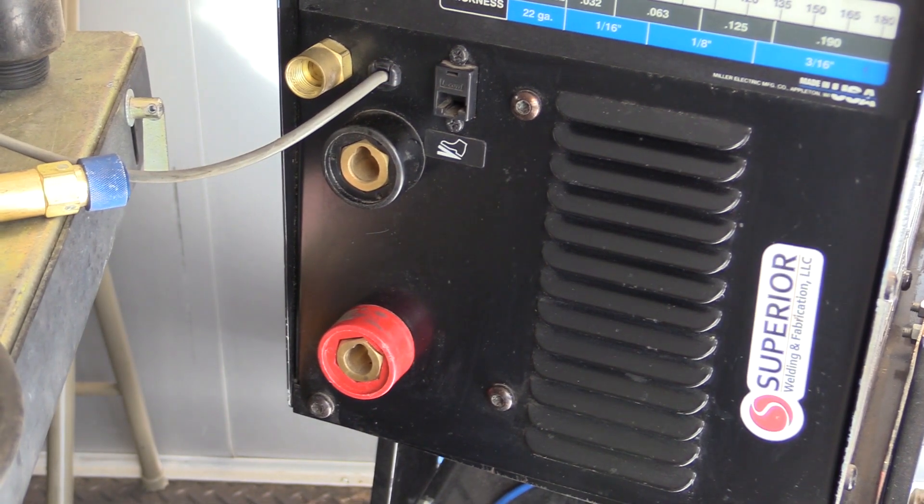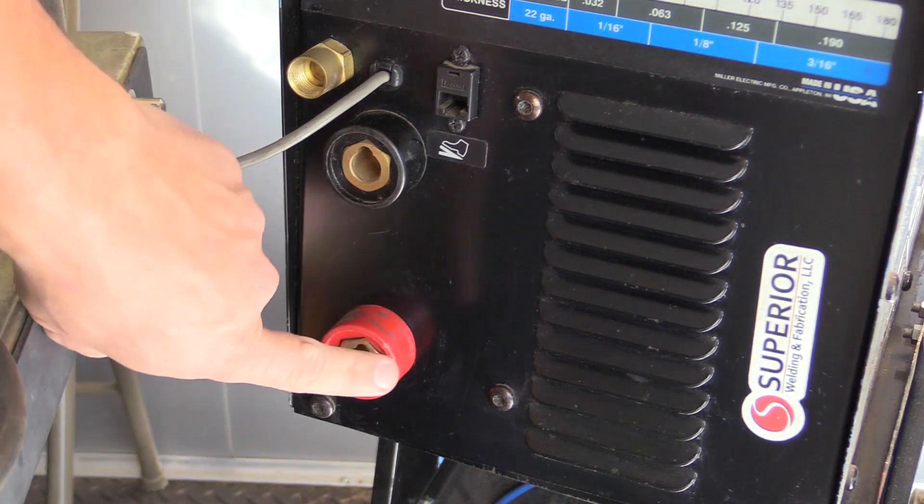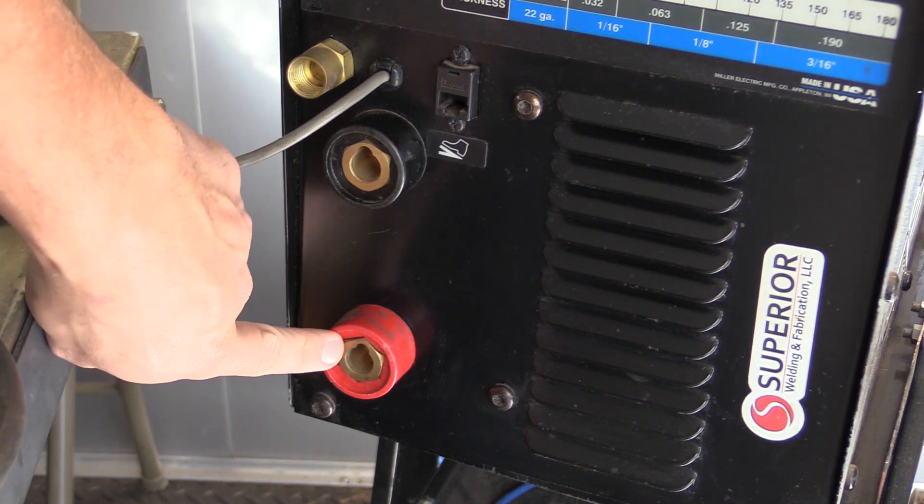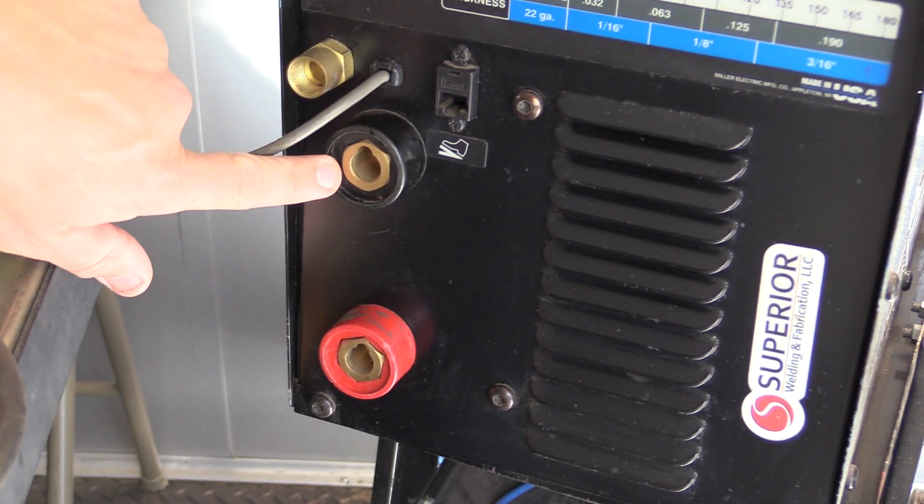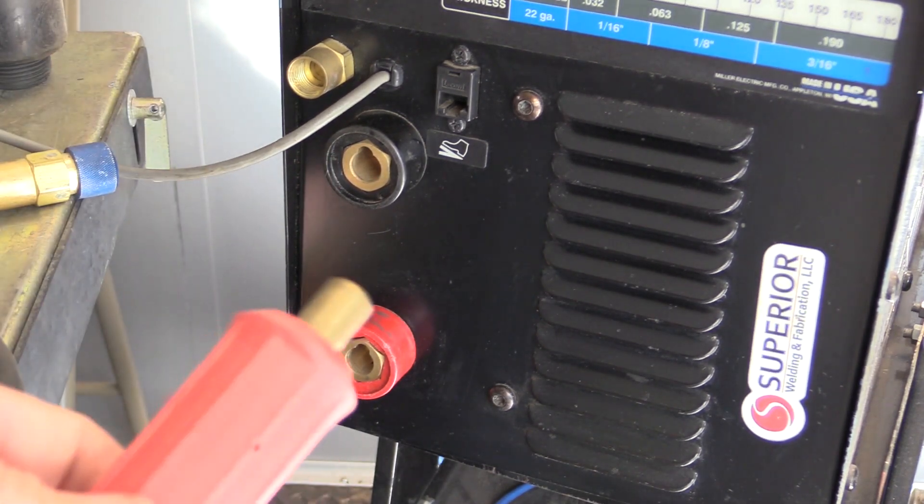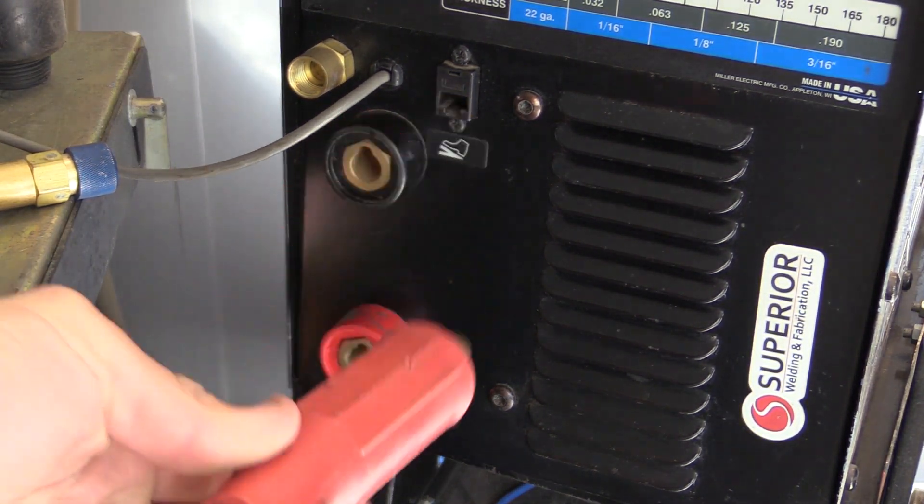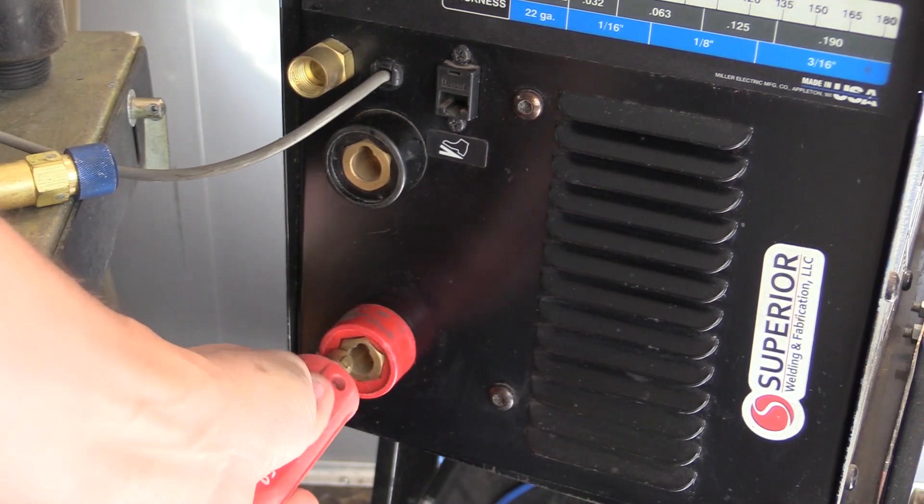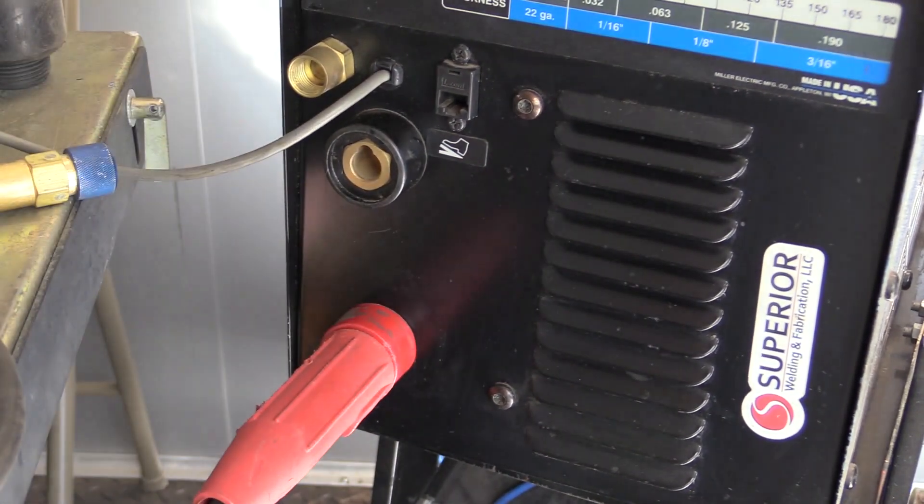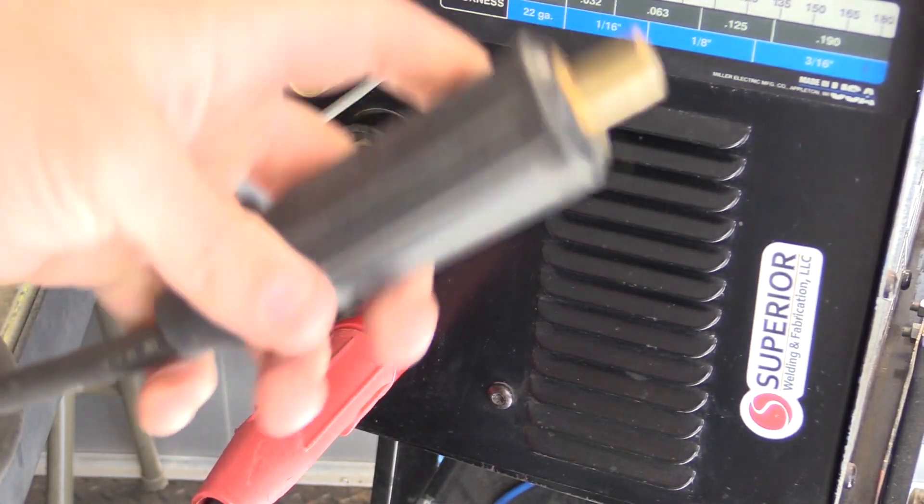When TIG welding, you want the ground to be on the positive, the TIG torch to be hooked up to the negative. This one happens to be color-matched, so we're going to hook in the ground and then the TIG torch.